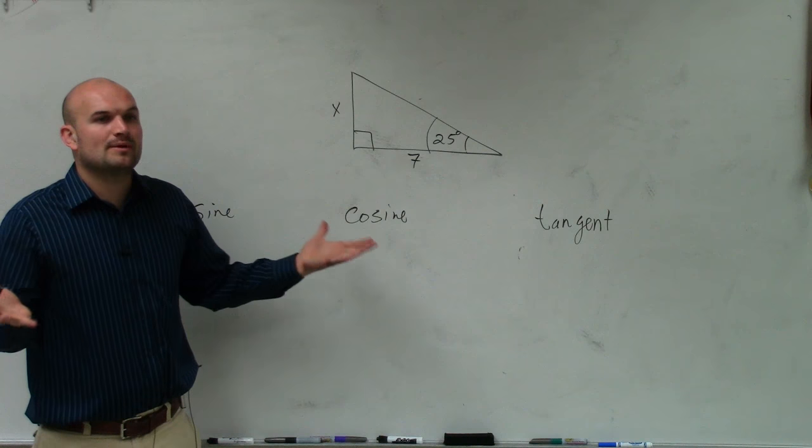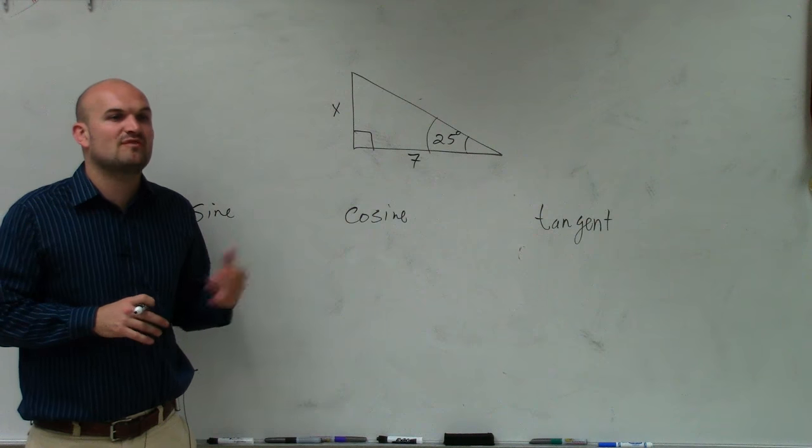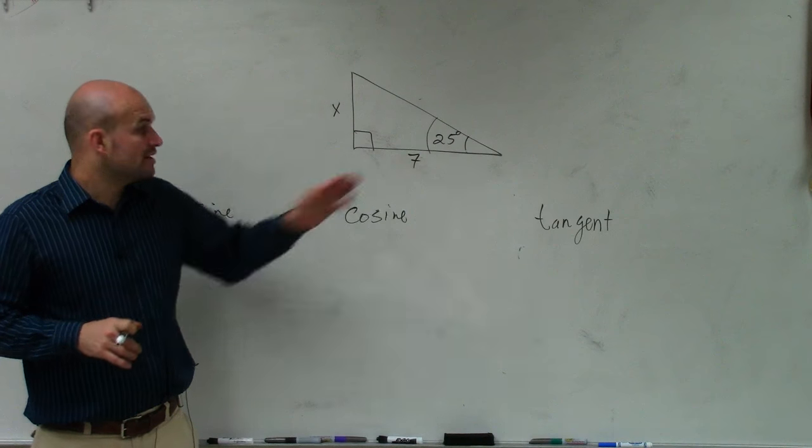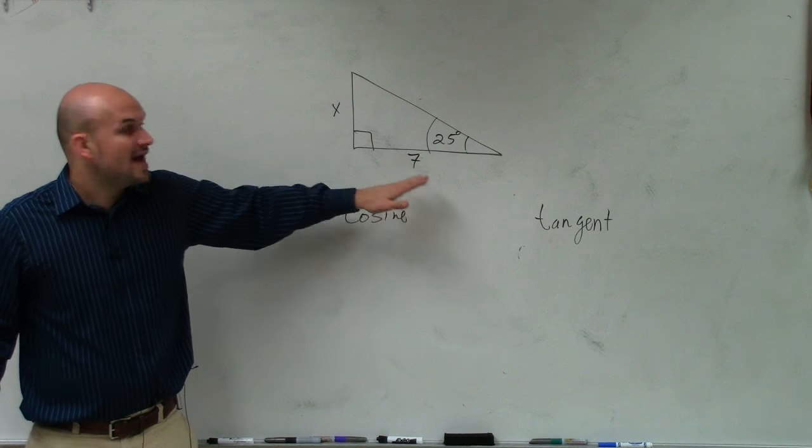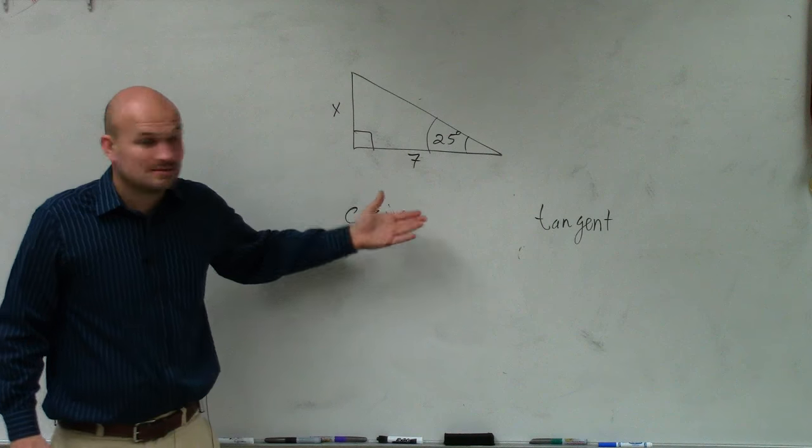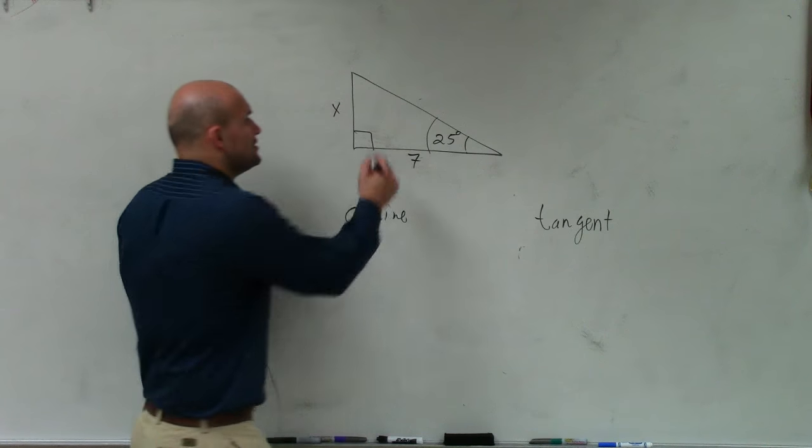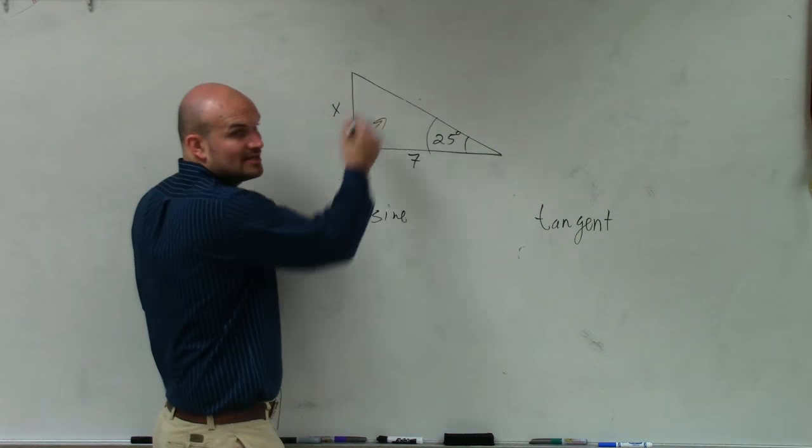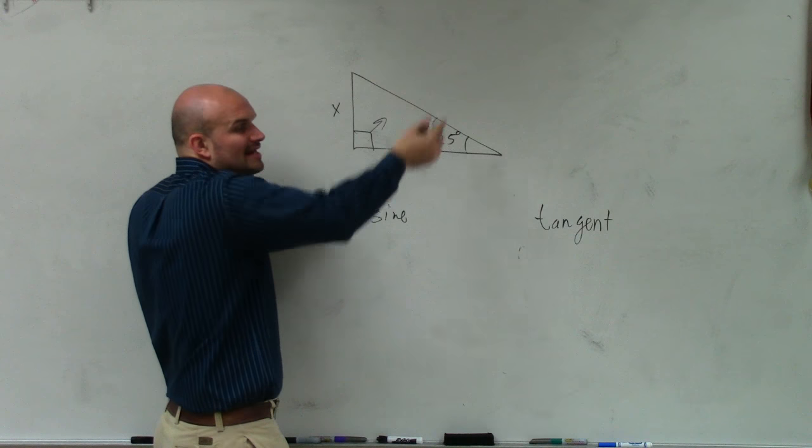We are provided the adjacent side. And then what are we trying to solve for? Opposite. The opposite. Hypotenuse is always right across there. The hypotenuse is not even a part of the problem.